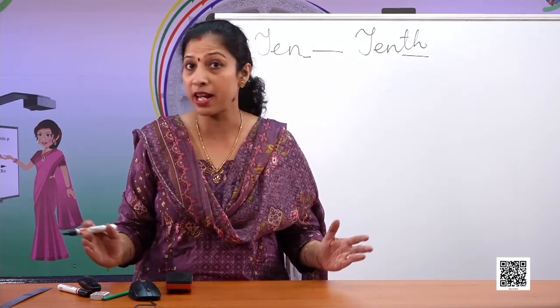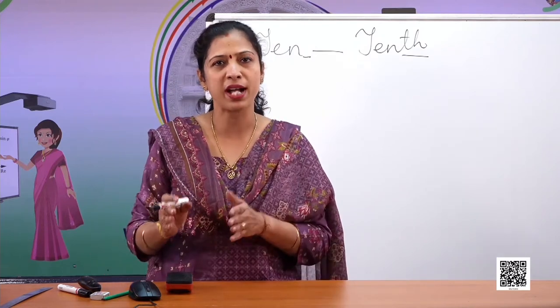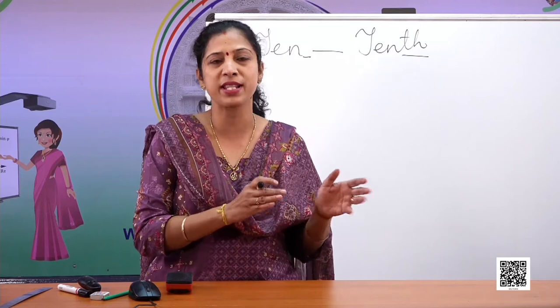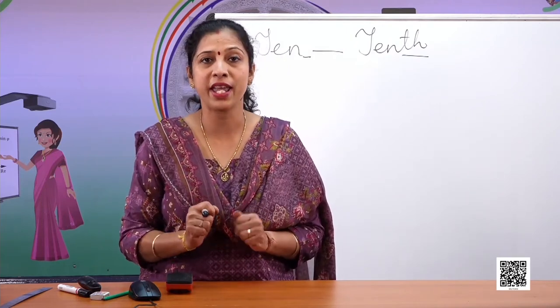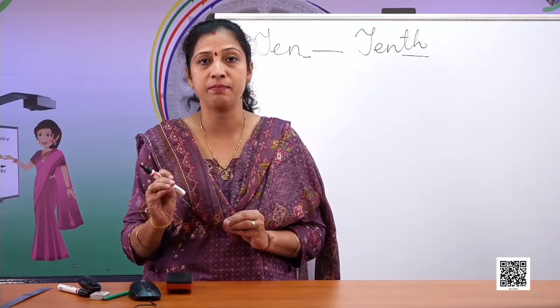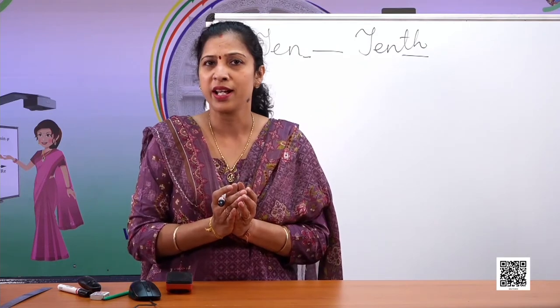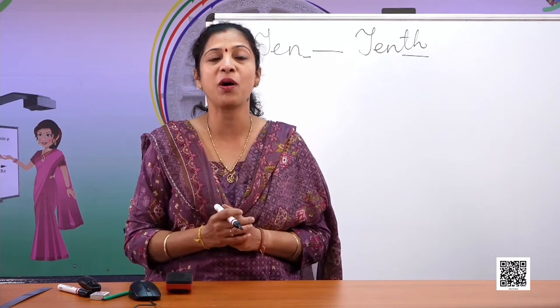Ten and hundred are place values — you have learned about place values of ones, tens, hundreds, thousands. These are whole numbers because they can be represented as one pencil, two pencils, four bags. They are called whole numbers. But what about things which are not whole? What about parts?